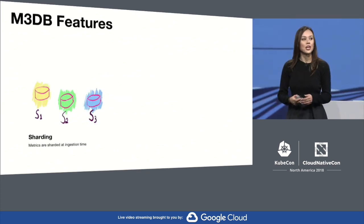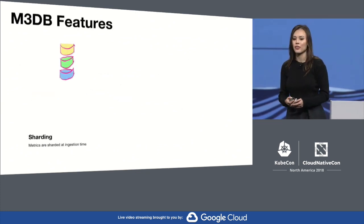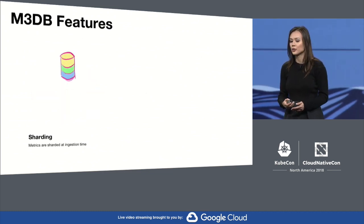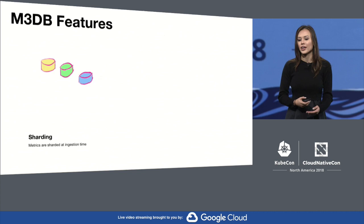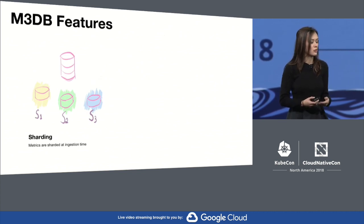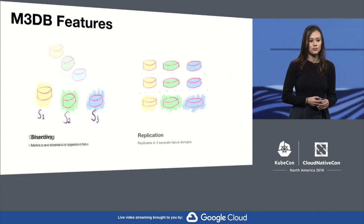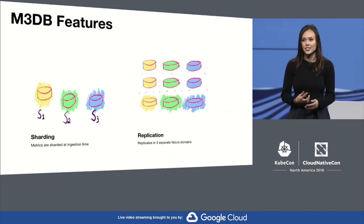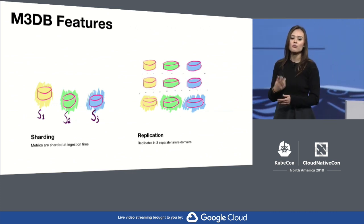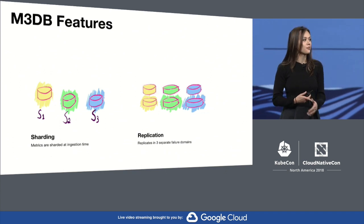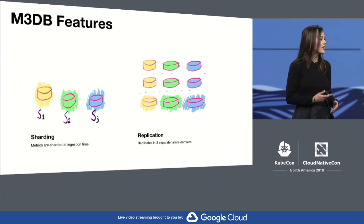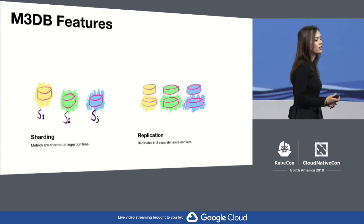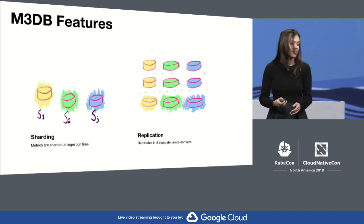M3DB stores real-time metrics from all of our services and hosts. Upon receiving a metric, M3DB shards the data into its respective partitions. Each shard is replicated by a factor of three, which are then placed in separate failure domains. The replicated environments are always synced, so when M3DB nodes are added, removed, or replaced, the replication factor and isolation group is honored when redistributing the shards to instances.